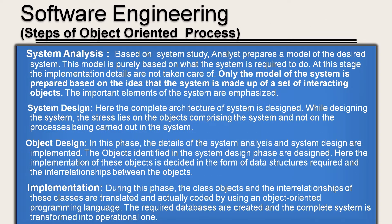What are the different steps of the object-oriented process? The object-oriented process includes system analysis, system design, object design, and implementation. In system analysis, based on the system study, the analyst prepares a model of the desired system. The model is purely based on what the system is required to do. At this stage, implementation details are not considered. Only the model of the system is prepared, based on the idea that the system is made up of a set of interacting objects, and the important elements of the system are emphasized.